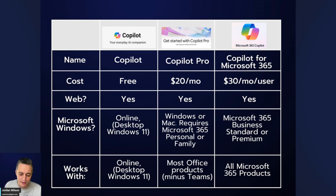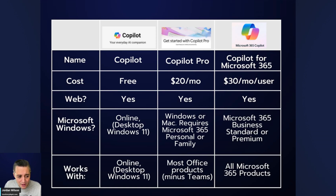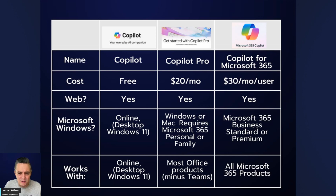Looking more closely at the difference between Copilot Pro and Microsoft 365 Copilot, I wish Microsoft had a little more consistency in the logo and design. Copilot uses the tagline 'your everyday AI companion,' while Microsoft 365 Copilot usually has '365 Copilot' in the logo, and Pro just says 'Pro.' It would help less-familiar users easily identify which product is being discussed.